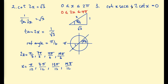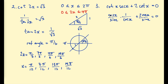Example 3: cotangent(x) · secant(x) plus 2 cotangent(x) equals 0, on the interval 0 to 2π. For this equation, I'd suggest writing all functions in terms of sine and cosine. Cotangent is cosine x over sine x, and secant is 1 over cosine x, and the second cotangent is also cosine over sine. We can cancel the cosine factors — cosine x cannot equal 0, otherwise secant x would be undefined — so cosine x is not a valid solution.